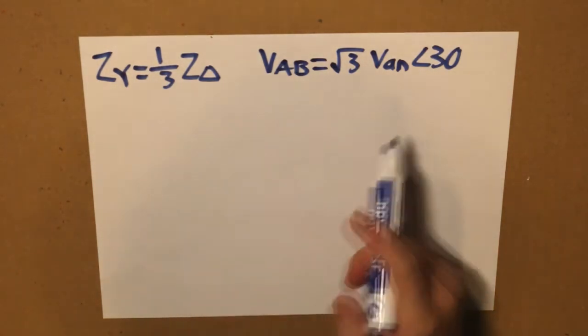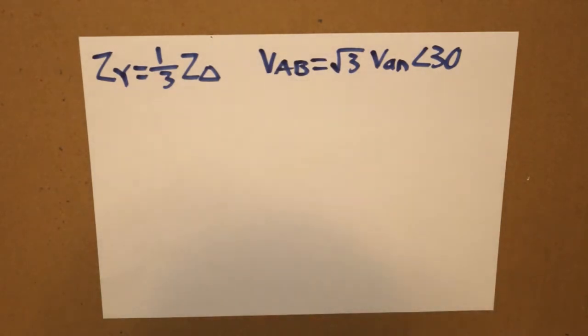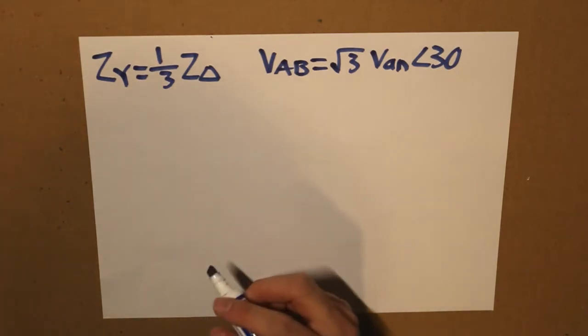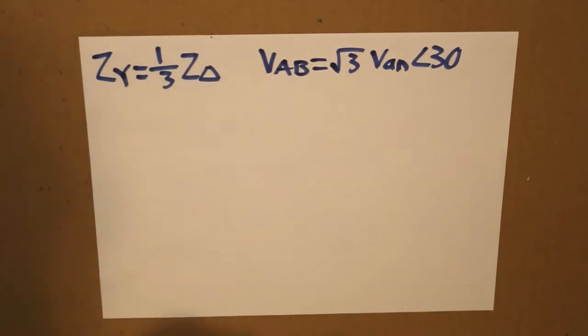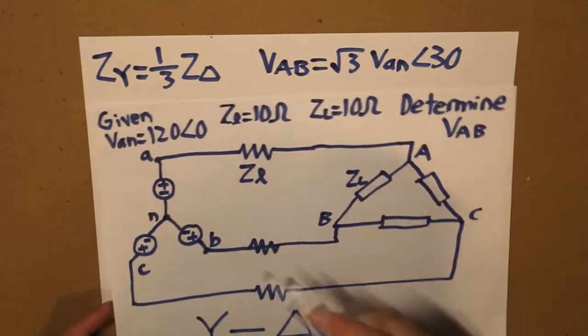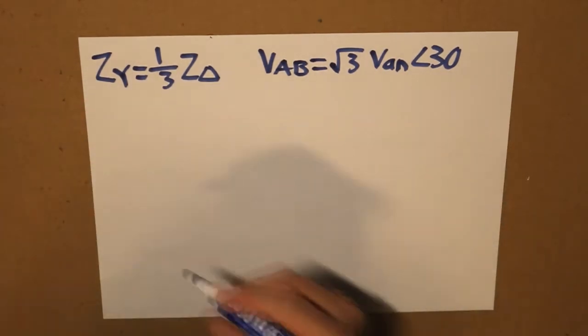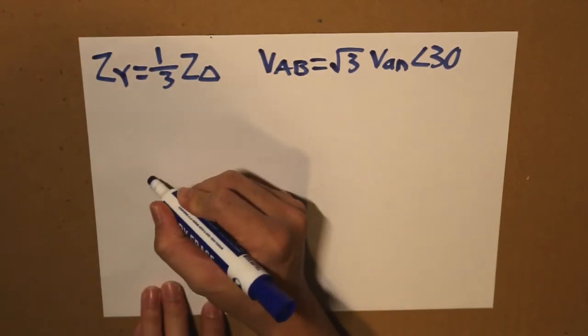So those are the two equations and now we can take our circuit and find our Y connected Y equivalent value given our delta situation in the beginning. So let's take this part and draw it out bigger.